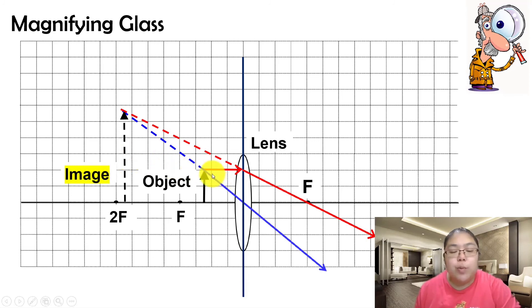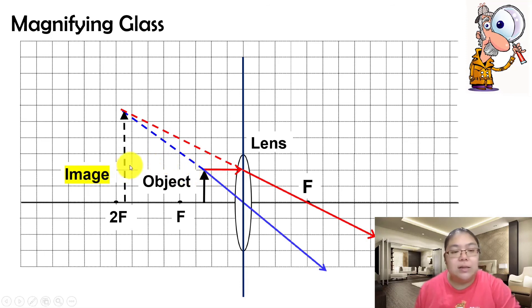So this is the magnifying glass ray diagram — how to draw it. You must remember the location of the object, the function of the magnifying glass, and the characteristics of the image: whether it is virtual or real, upright or inverted, and its size.